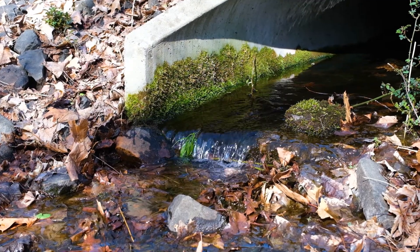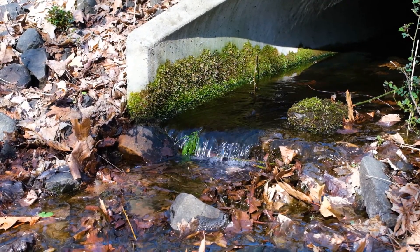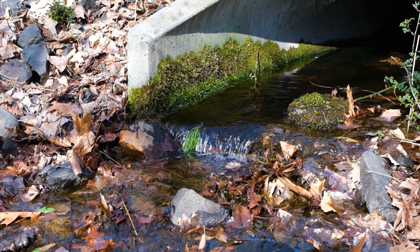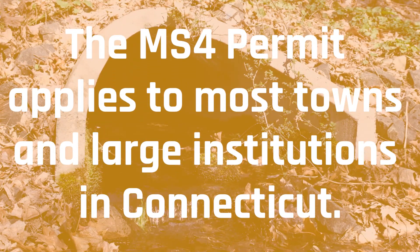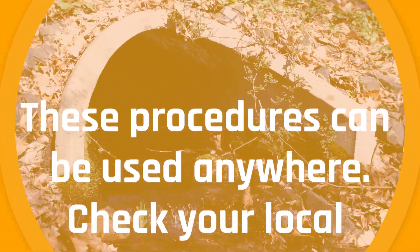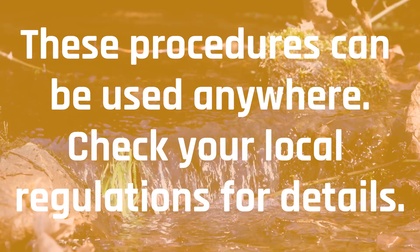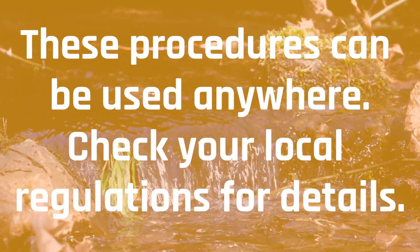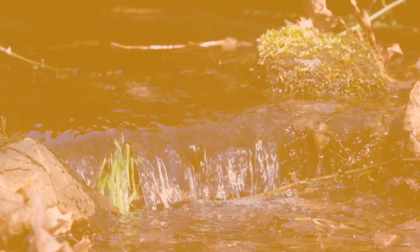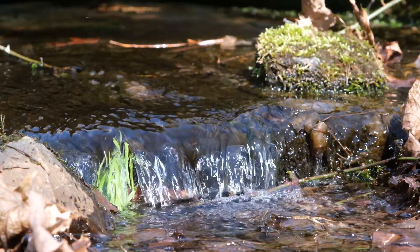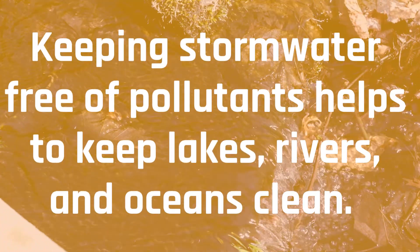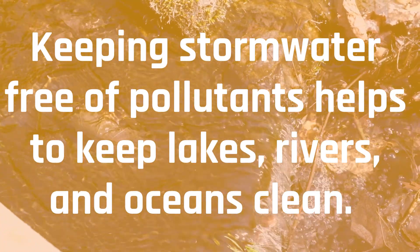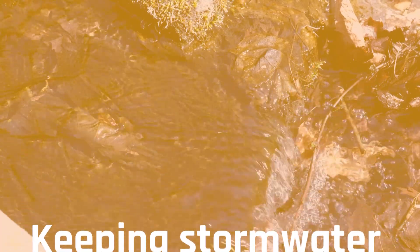The General Permit for the Discharge of Stormwater from Small Municipal Separate Storm Sewer Systems, otherwise known as MS4, is a Connecticut Department of Energy and Environmental Protection regulated permit intended to prevent stormwater pollution and protect our water bodies. Stormwater systems often discharge via outlets or outfalls to water bodies, thus keeping your stormwater free of pollutants helps to keep lakes, rivers, oceans, and other water bodies clean.